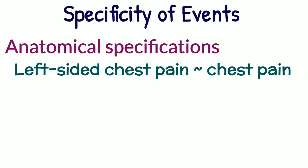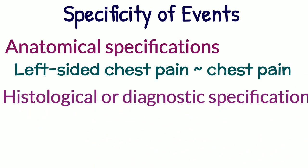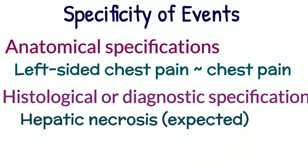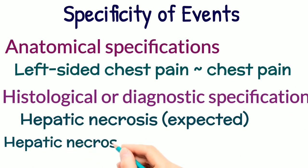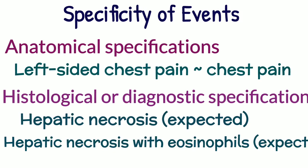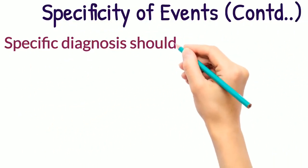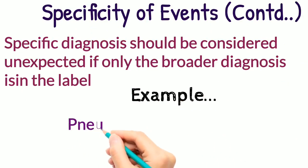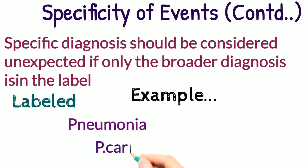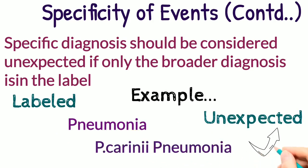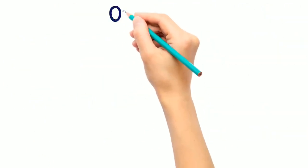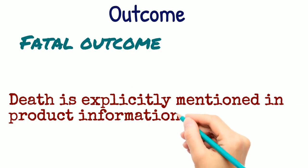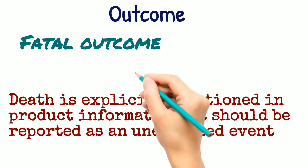Further, histological or diagnostic specification does not make an event unexpected. For example, if hepatic necrosis is expected, then a liver biopsy showing hepatic necrosis with the presence of eosinophils — which is not mentioned in labeling — does not make the event unexpected. However, a specific diagnosis should be considered unexpected if only the broader diagnosis is in the label. For example, if pneumonia is in the label and a case of PCP (Pneumocystis) pneumonia is seen which is not in the label, the event would be considered unexpected. Regarding outcome, given the importance and sensitivity associated with cases involving death, unless death is explicitly mentioned in the product information, it should be reported as an unexpected event.